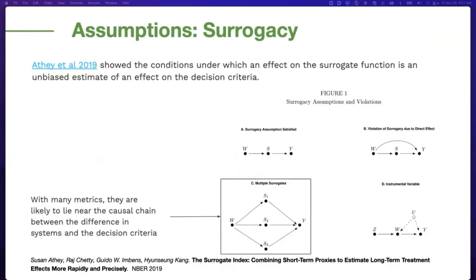Next is the surrogacy assumption, which specifies the condition under which an effect on the surrogate function is unbiased. We use a set of proxy metrics or surrogates S to predict the retention outcome Y given a product change or treatment W. The causal chain is shown in the figure: the surrogacy assumption is satisfied if all the information between treatment and outcome flows through the surrogates. It is violated if information flows directly from treatment to outcome — that is, all the effect on outcome Y must be mediated through surrogates S.